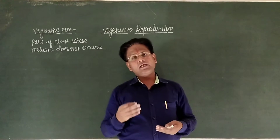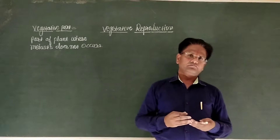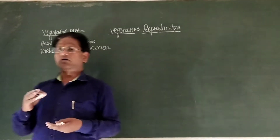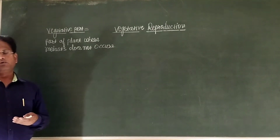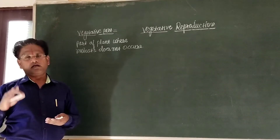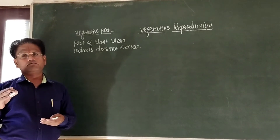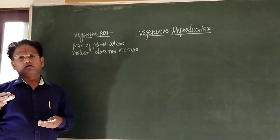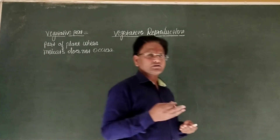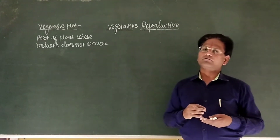Vegetative reproduction commonly occurs in the presence of favorable environmental conditions — meaning in the presence of abundant or favorable conditions such as adequate water, oxygen, temperature, and other required parameters for growth. That environment is known as a favorable environmental condition.